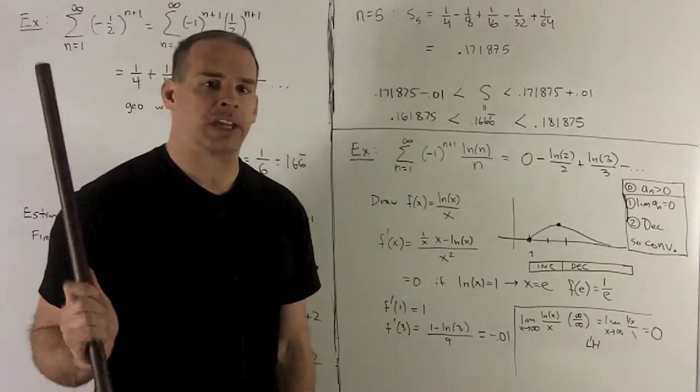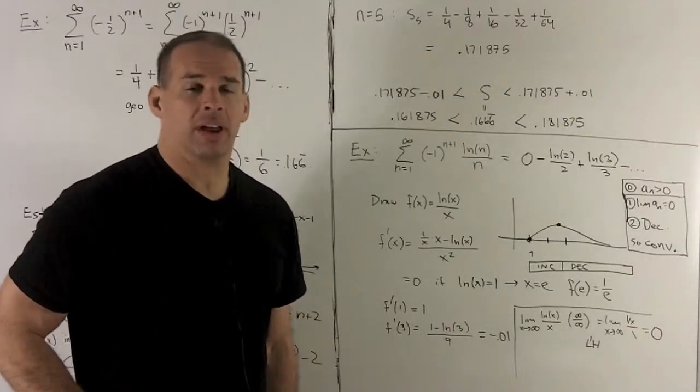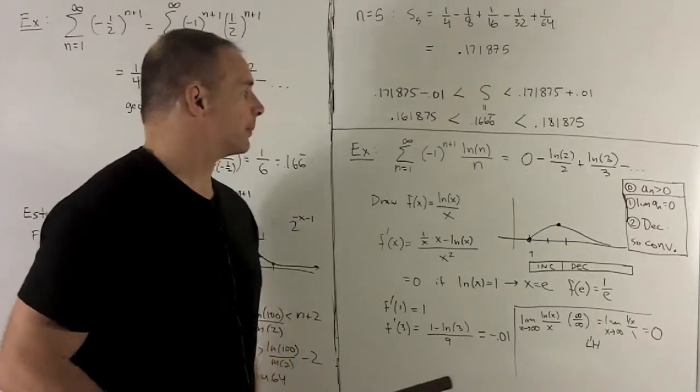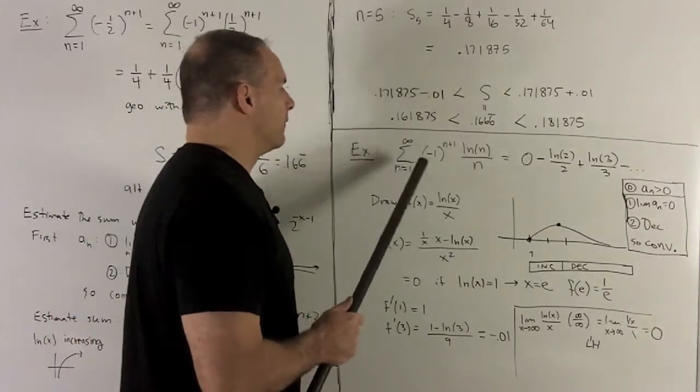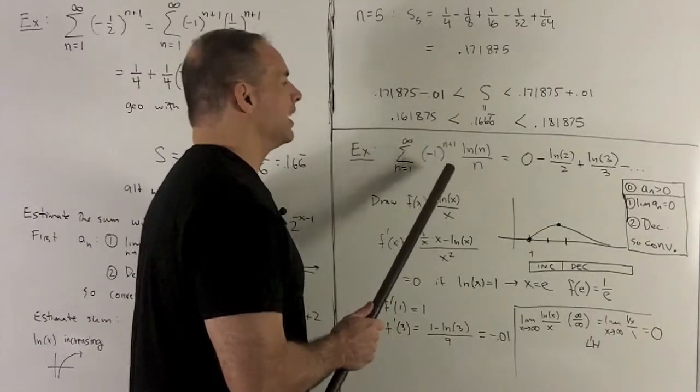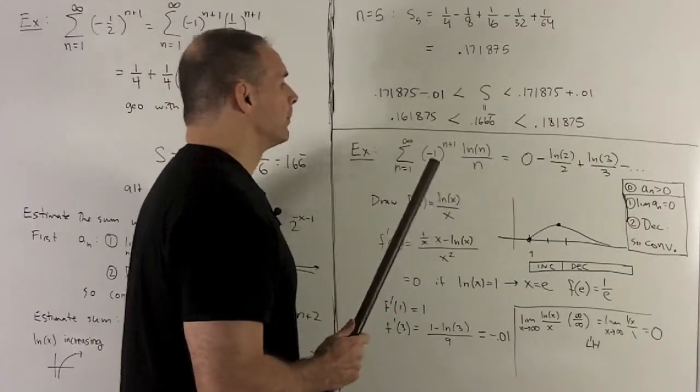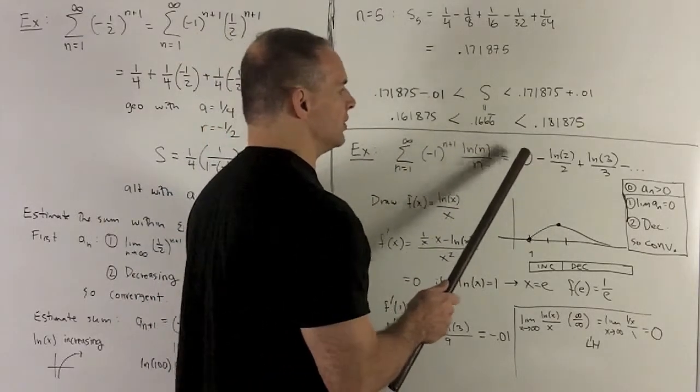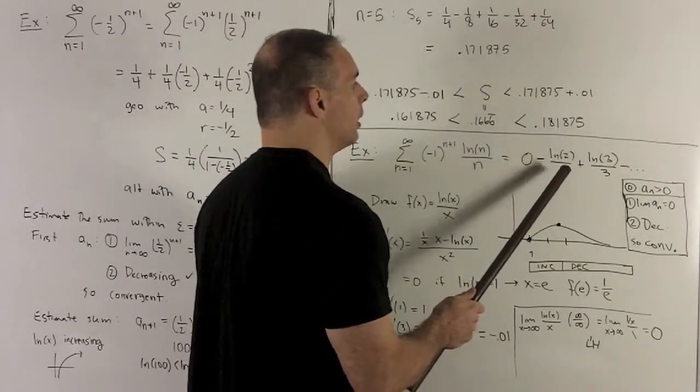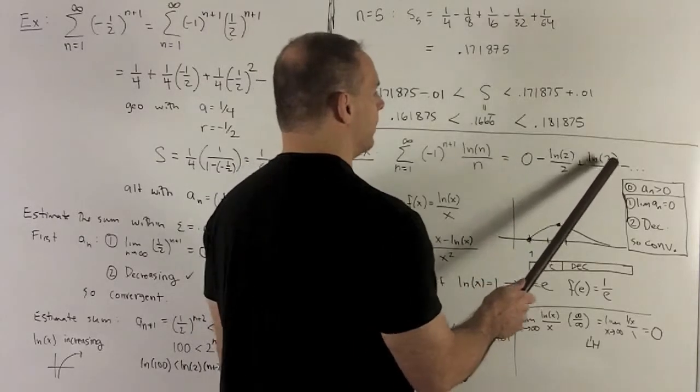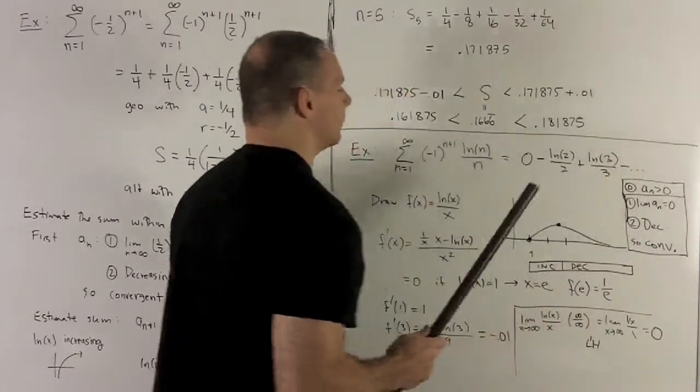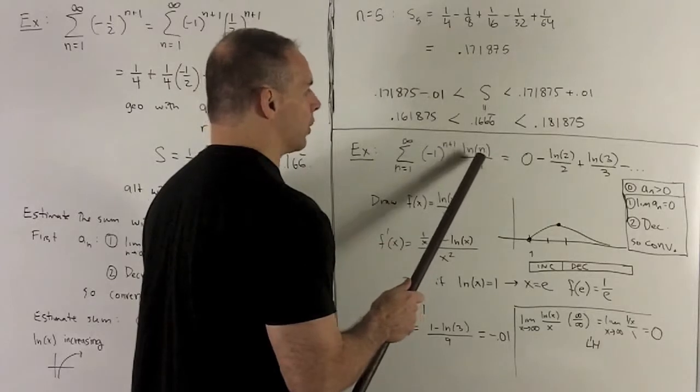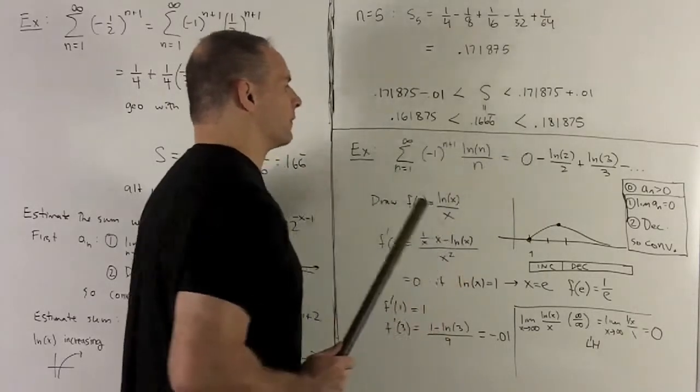All right. Let's just look at another straight up application of the alternating series test. Let's go with sum from n equals 1 to infinity, minus 1 to the n plus 1, natural log of n over n. I write out the first few terms. It's 0 minus natural log of 2 over 2 plus natural log of 3 over 3 minus and so on. Remember natural log of 1 is 0. So that's why we get a 0 up in the first slot.